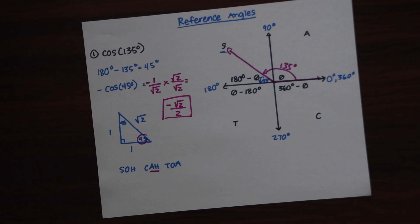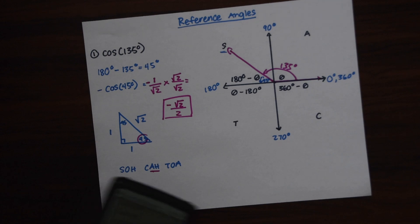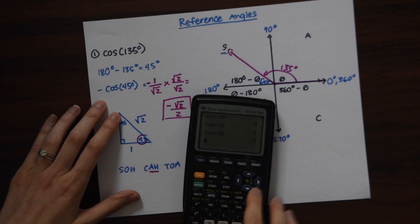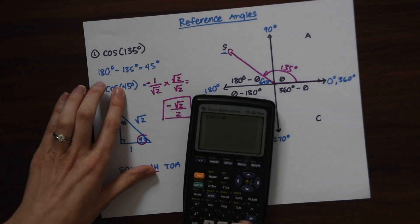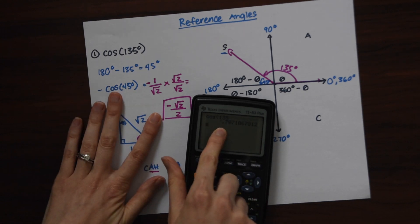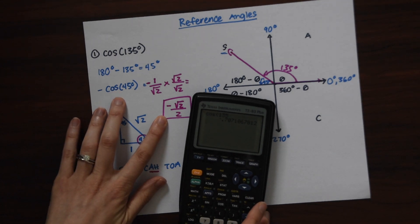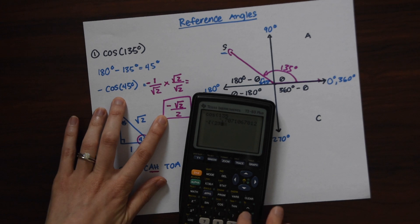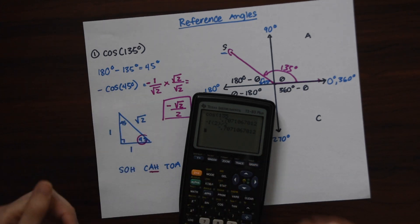The great thing is we get an exact answer without a calculator, and we can check it. If we go into the calculator and put in cosine of 135, we get negative 0.707. And if we put in negative √2 divided by 2, we get that same number — so we know we're right.